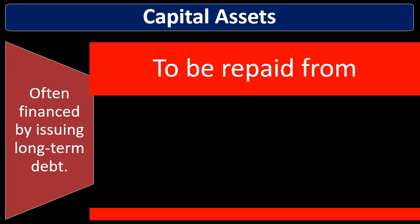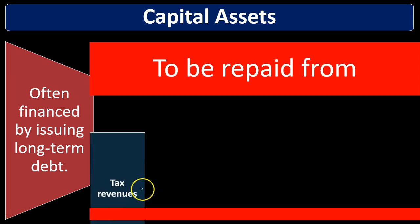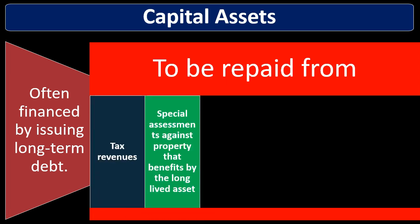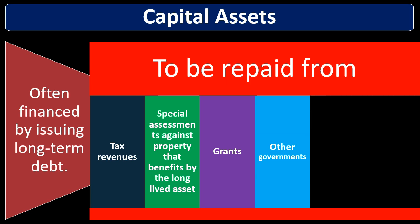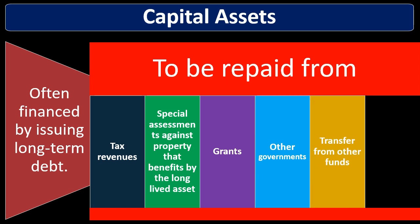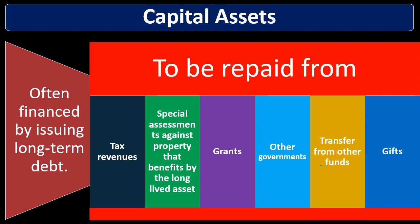The question is how do we repay the debts used to purchase capital assets? We have tax revenues that could be used to pay for them. We may have some type of special assessment against property that benefits from the long-lived assets, tying the cost to those most benefiting. We could also have grants, assistance from other governments, transfers from other funds such as the general fund, or gifts to finance capital projects.